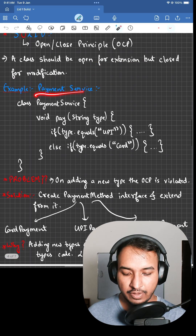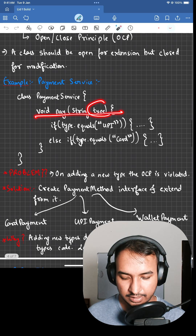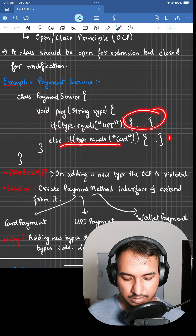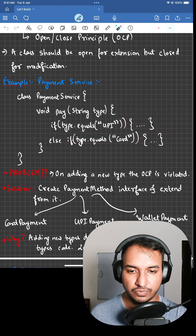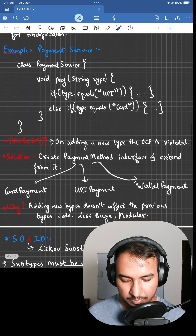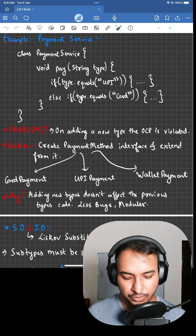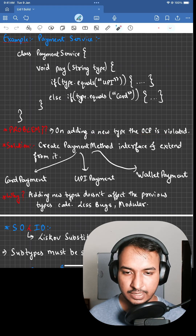For example, we have a payment service — void pay — that takes a type. If type is equal to UPI, it does some code. If type is equal to card, it executes some piece of code. The problem is that on adding a new feature or new type, the Open-Closed Principle is violated.